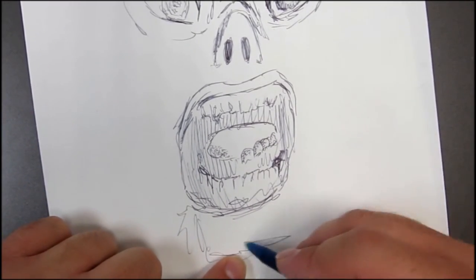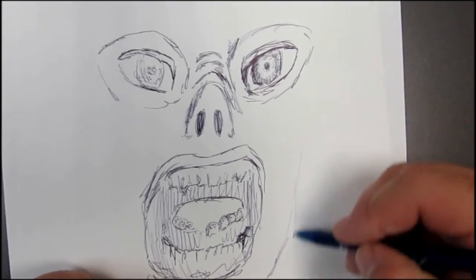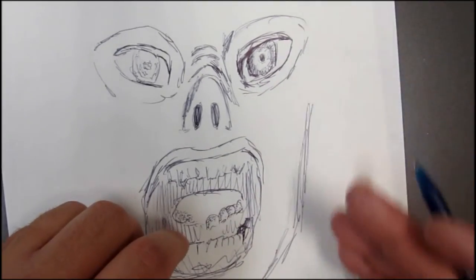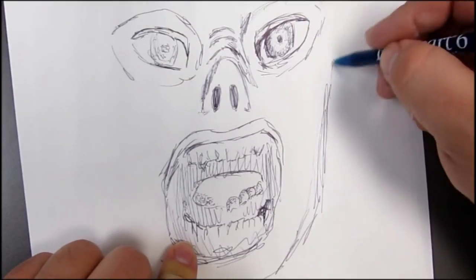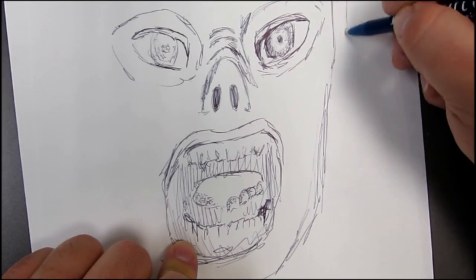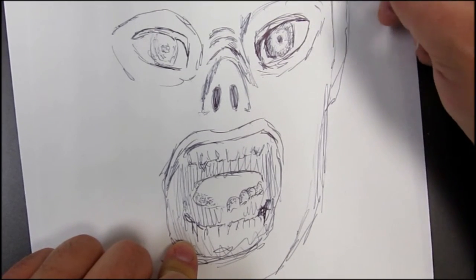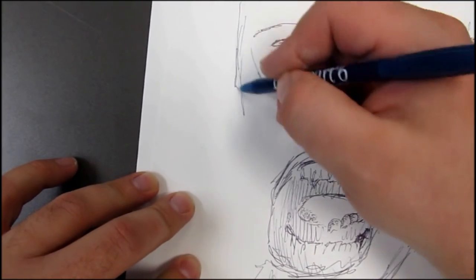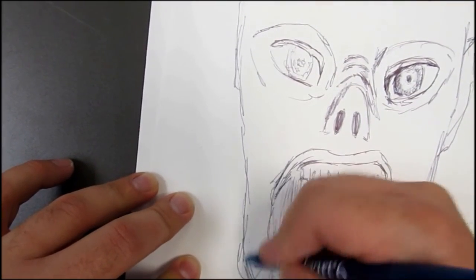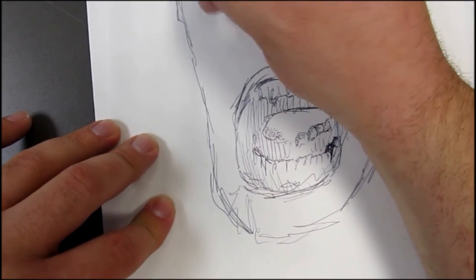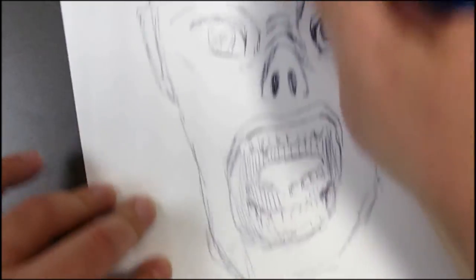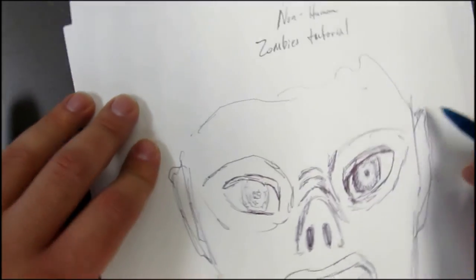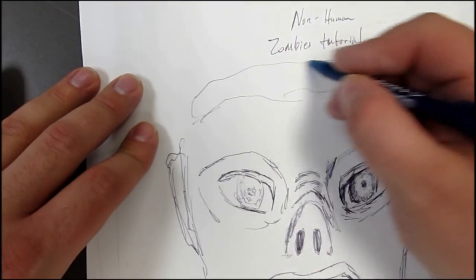And down to the chin area. Now for the jaw it's stretched out here so we're going to have a longer, less of a rounded J on the side of the head, more of a stretched out version. An ear shape just to give that last bit of human essence that's left in our guy. On the top of the head it's just a little bit of a jagged line here because we're going to have our brains exposed.